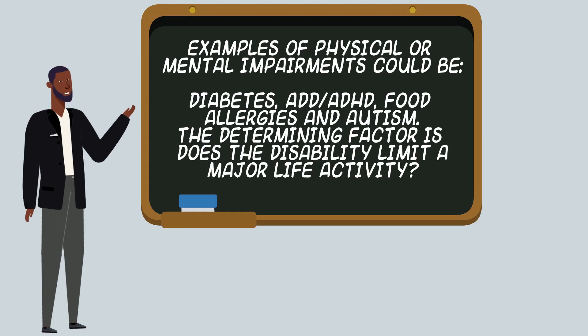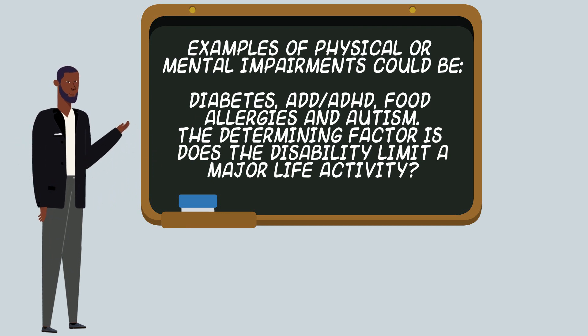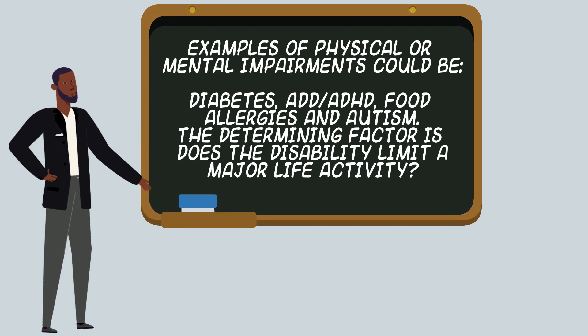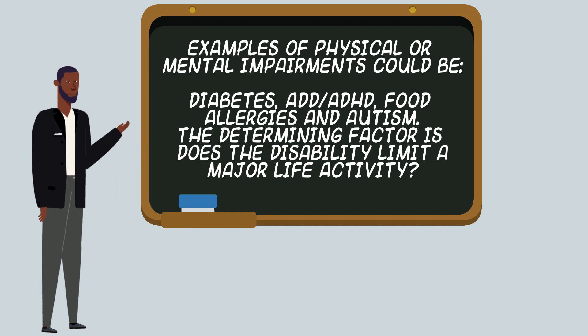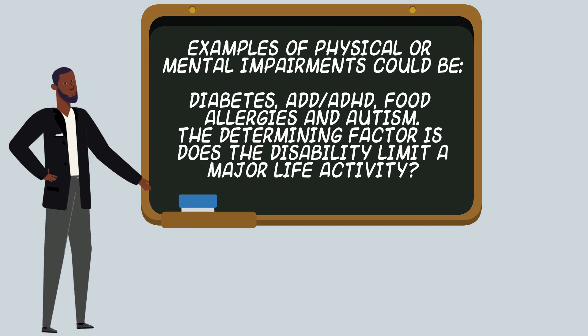Examples of physical or mental impairments could be diabetes, ADD, ADHD, food allergies, or autism. The determining factor is: does the disability limit a major life activity?